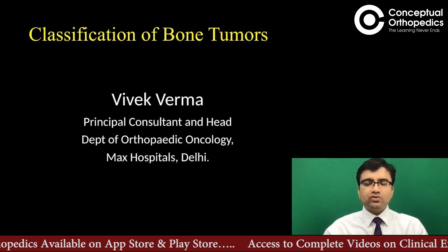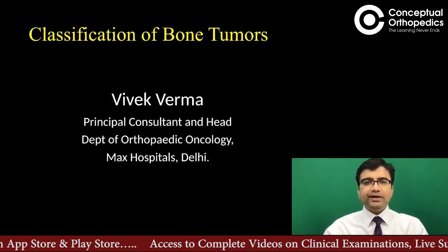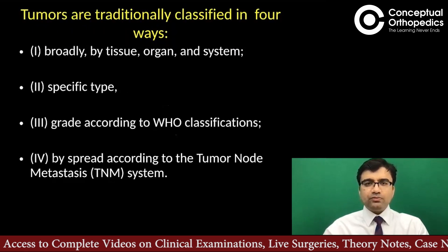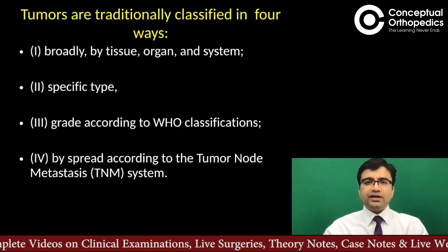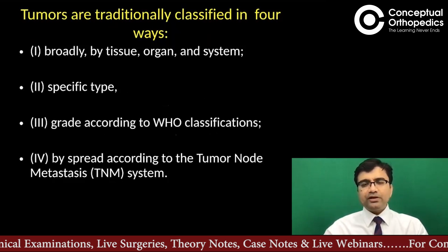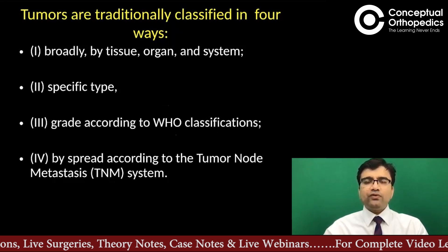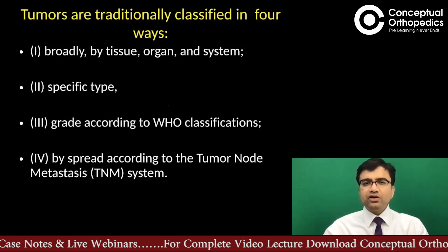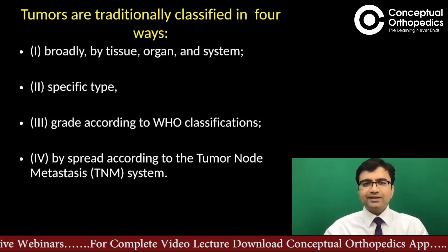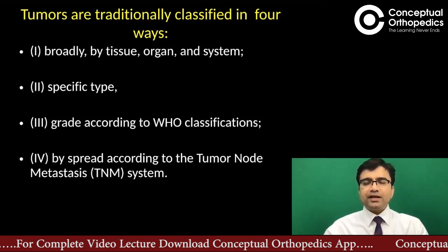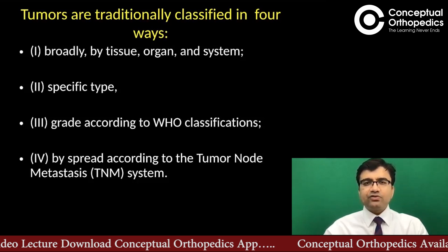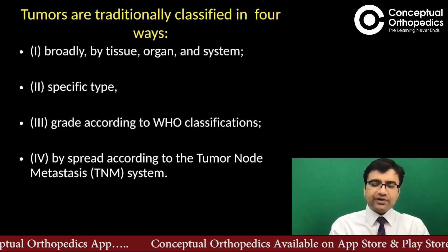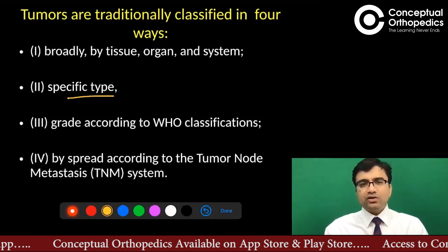We must also know why we need to classify these bone tumors. Normally, tumors are classified in four ways — this is a very common general method followed in oncology, not specific to bone tumors. We classify them by where they are starting: the tissue, the organ, the system, and then whether it is a bone tumor or a breast cancer — depending upon the site and tissues, and whether it is primary or metastatic.